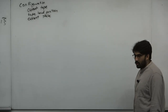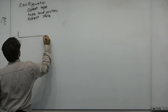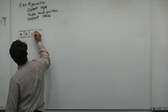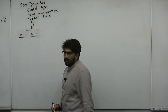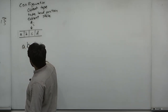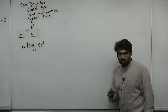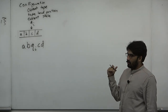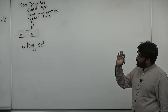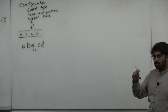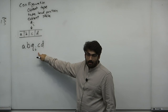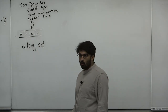What should a configuration contain? It should contain the current tape, the tape head position (which cell is the head hovering over), and the current state. These are the only three things. We encode them into a specific string: if the tape is A, B, C, D and the head is over C in state QI, we write the configuration as A B QI C D — inserting the state symbol before the letter being read.